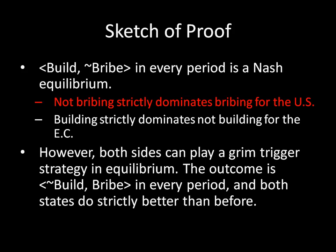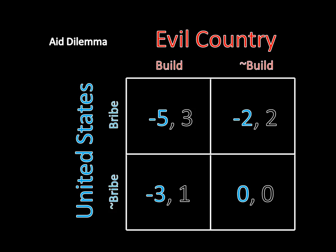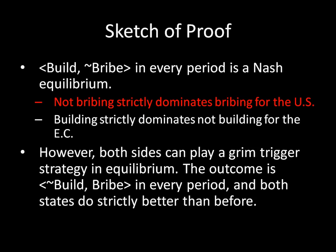We're going to start by showing that not bribing strictly dominates bribing for the United States. Going to this game matrix: if the evil country builds, the United States gets negative five for bribing and negative three for not bribing, so the United States would want to not bribe. And if the evil country does not build, the United States gets negative two for bribing and zero for not bribing. Zero is greater than negative two, so again the United States would want to not bribe. Regardless of what the evil country does, the United States is better off not bribing in the one-shot version of this game.